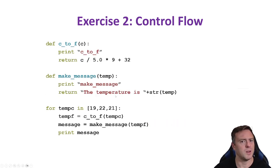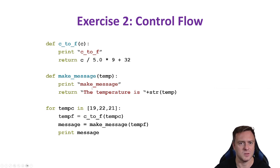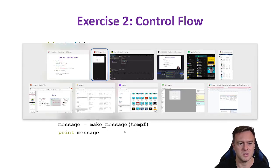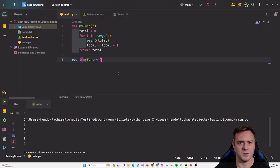So then we've got another flow control example. We've got a C-to-F function and a make_message function. The message is 'The temperature is' plus string(temp). We've got temp_C in [19, 22, 21], temp_F equals c_to_f of temp_C, the message equals make_message of temp_C and temp_F, and then we print the message. Let's see what happens if we build this.